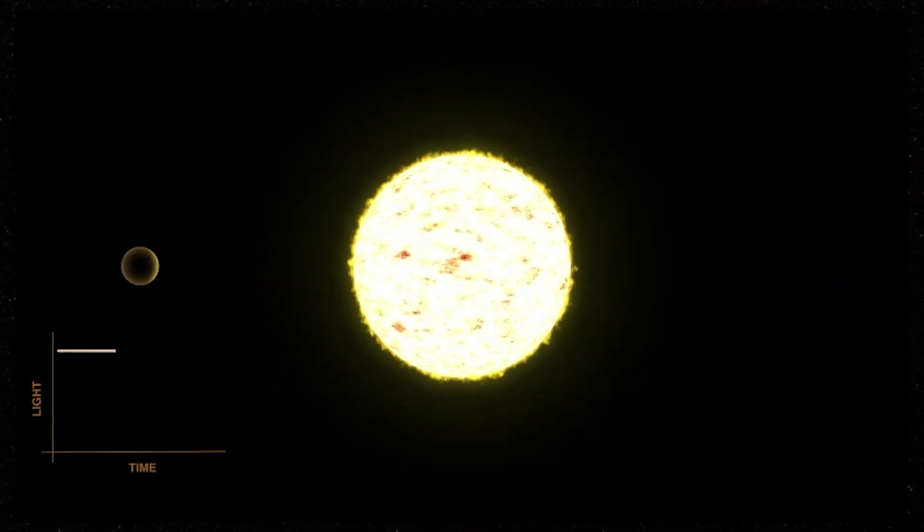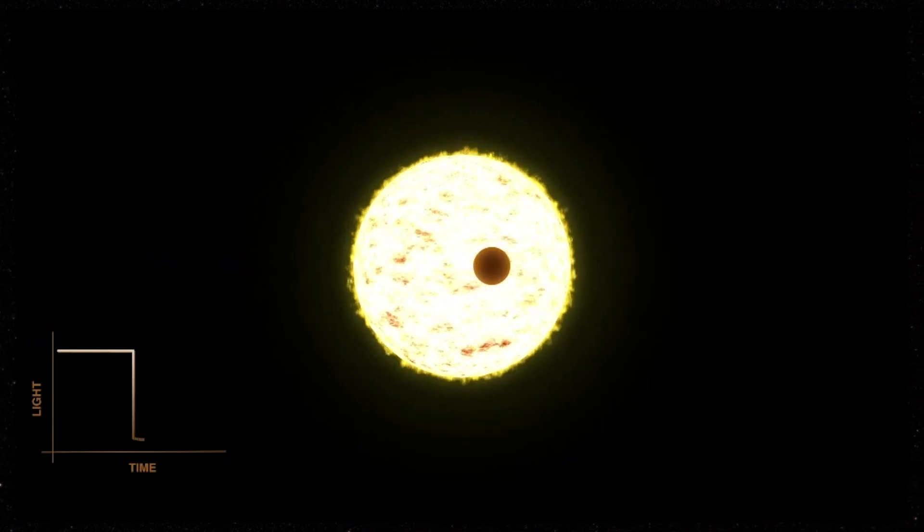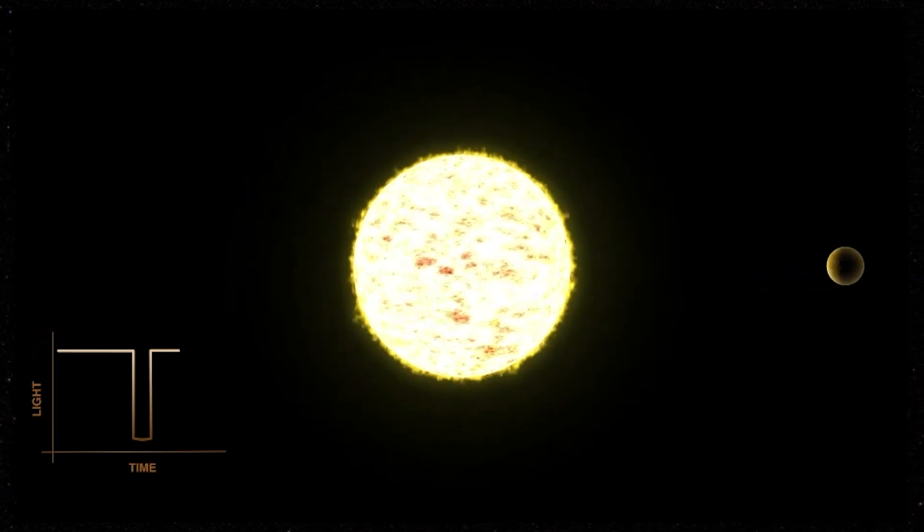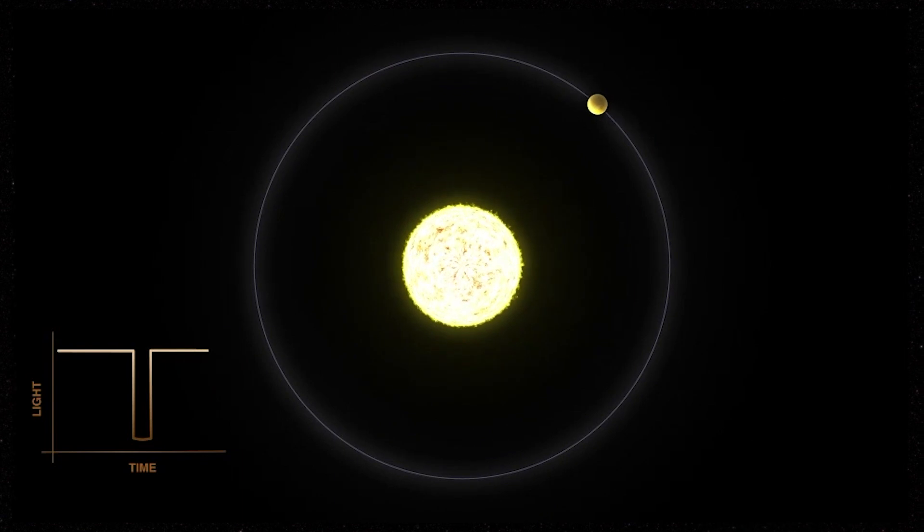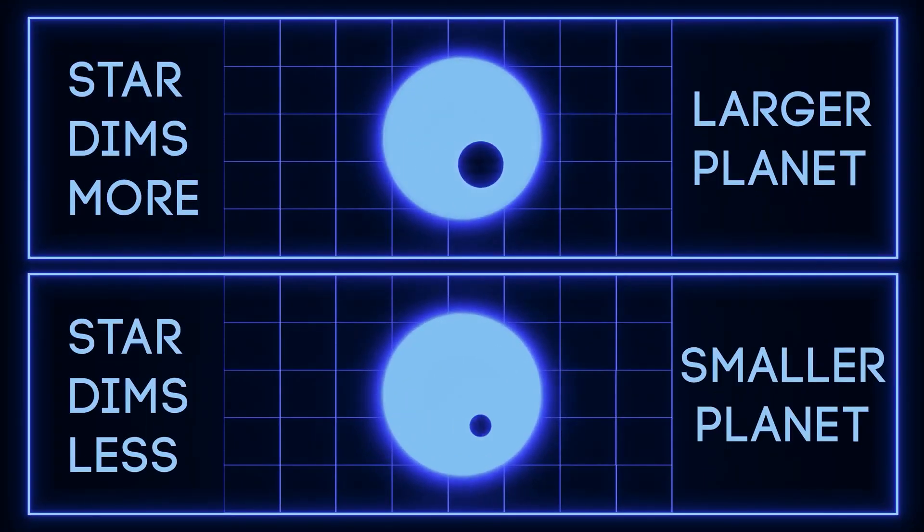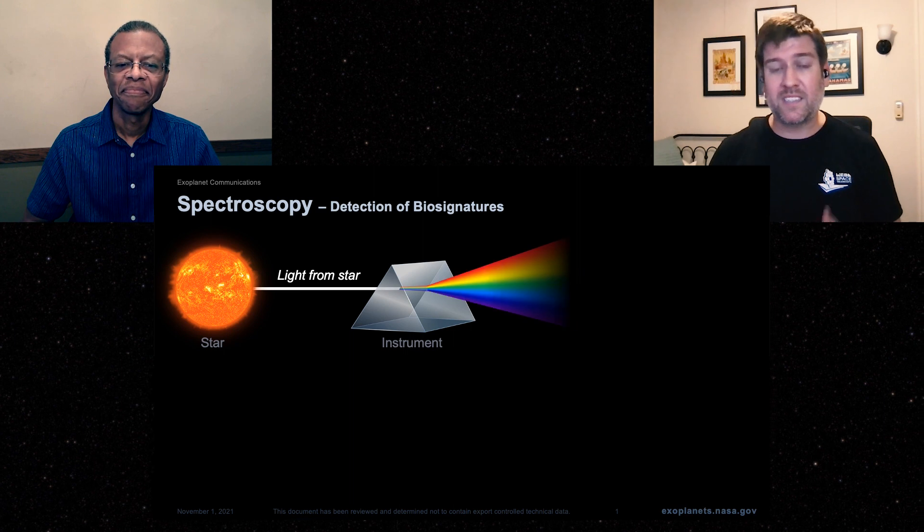So the transit method is when we're observing a star, a planet can actually pass in front of the star and block out the star's light. And the amount of light that the planet blocks out from the host star directly tells us how big the planet is relative to its host star. The bigger the planet, the more light that's blocked out, the dimmer the star gets. The smaller the planet, the smaller the dip in brightness. And this method has been used to discover a majority of the known exoplanets today.